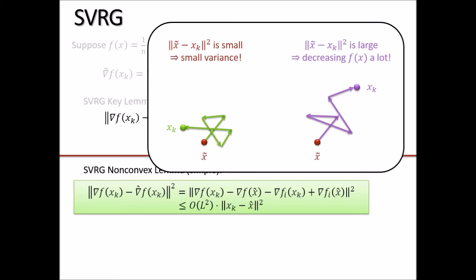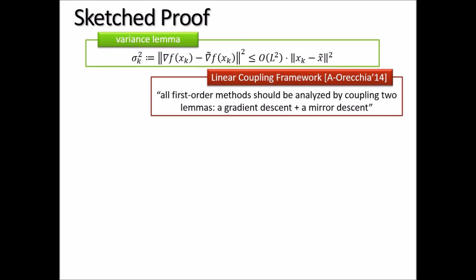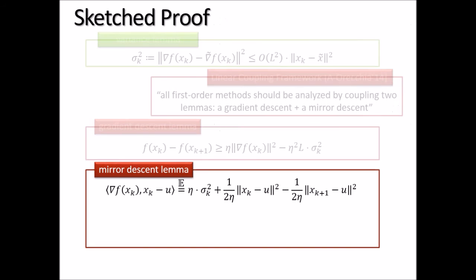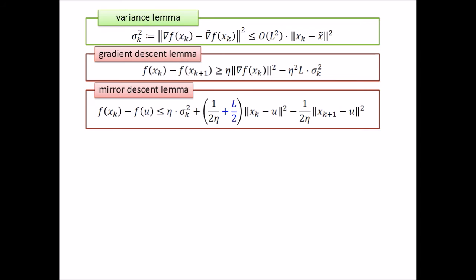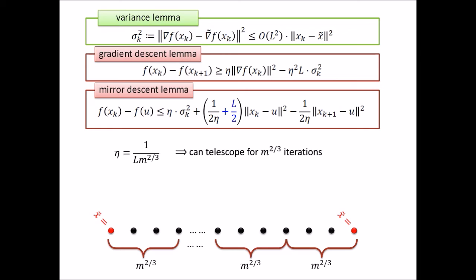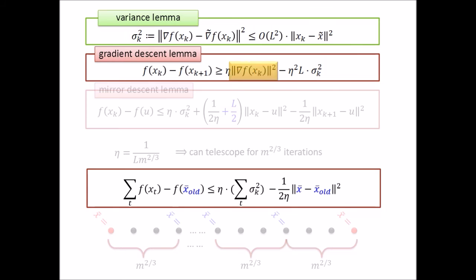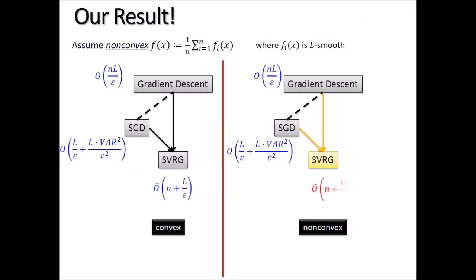For those interested in the proof structure: we use this variance lemma together with the linear coupling framework, which analyzes first-order methods by combining gradient descent and mirror descent. We provide a non-convex version of gradient and mirror descent, then use a telescoping scheme where each epoch is decomposed into sub-epochs for analysis purposes. Telescoping within each sub-epoch causes good terms to cancel, yielding the final result. The paper includes a one-page sketch proof.